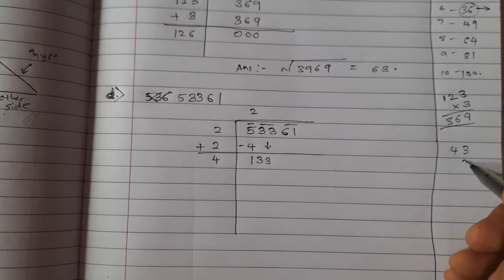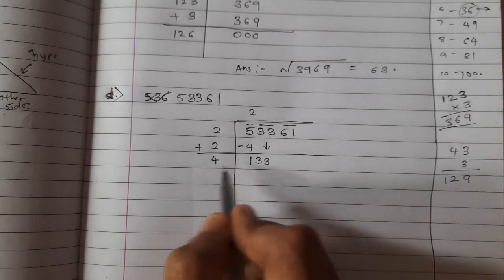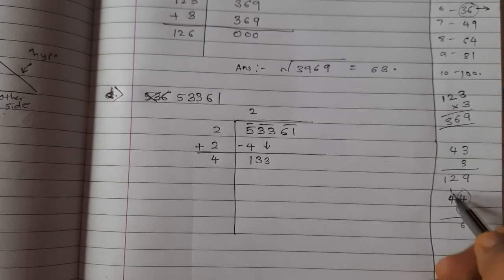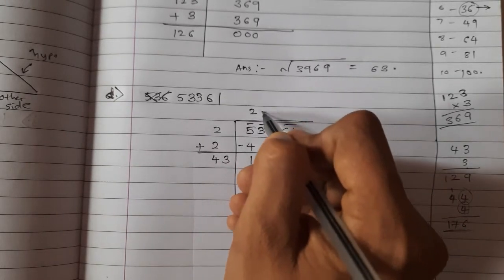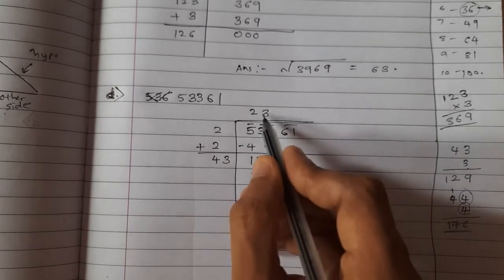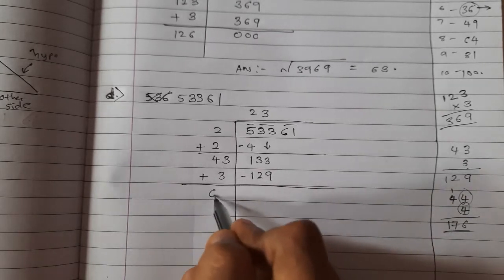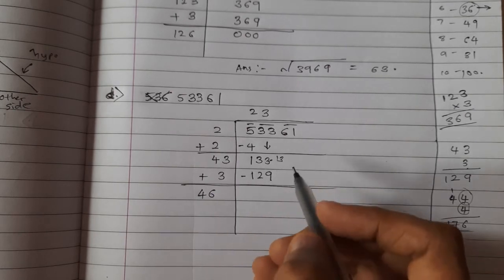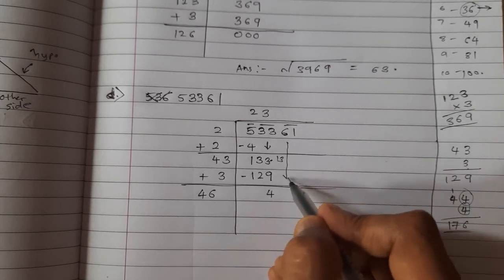Write 4 and suppose you take 3 here, then multiply 43 × 3 = 129, which is nearest to 133. Check: if you take 4, then 44 × 4 = 176, which is greater. So take 43, write 3, and write 129. Subtract: 133 − 129 = 4. Add 3 to divisor: 43 + 3 = 46. Bring down next group: 461.